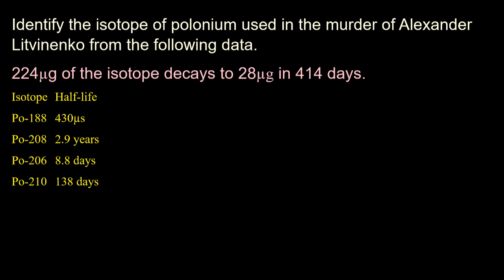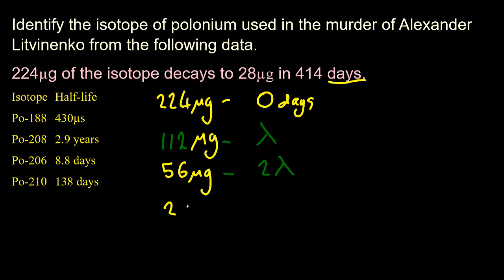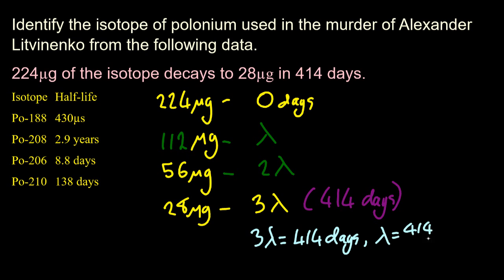Identify the isotope of polonium used to murder Alexander Litvinenko in London a few years ago from the following data. 224 micrograms of the isotope decays to 28 micrograms. Let's set up that little table again. 224 micrograms at 0 days. I'm going to half that, but I don't know how long the half-life is. So I'm just going to put lambda. Lambda is the symbol for half-life. Halving again, that's twice as many half-lives. Halving again, that's three half-lives. I'm down to my 28 micrograms. Now I know that the three half-lives is 414 days. So just by rearranging, I can work out what the half-life is, which is 138 days. So that was polonium-210.